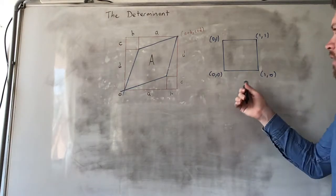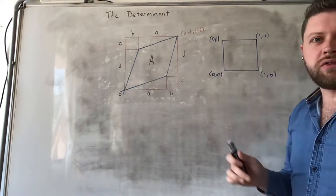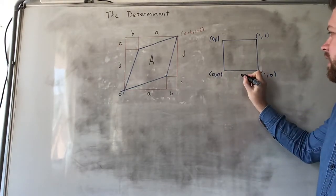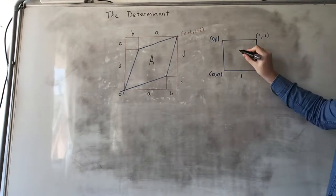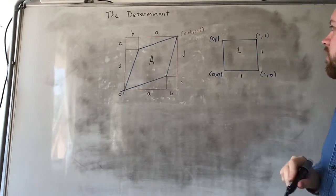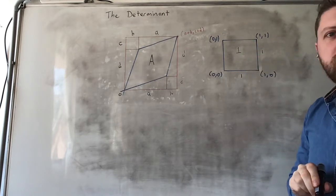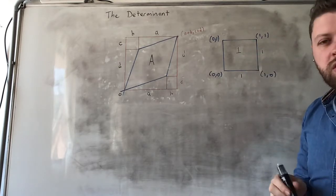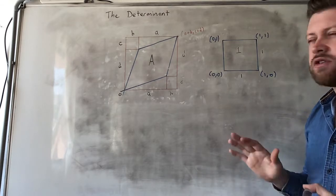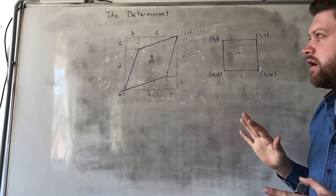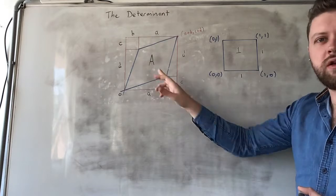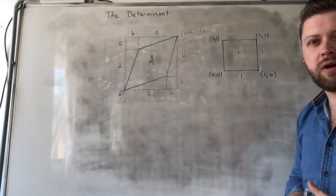So what is the area of our original square? This side is of length 1 and this side is of length 1, so the area of this square is 1. That makes things nice and simple when we want to compare it with the transformed parallelogram.